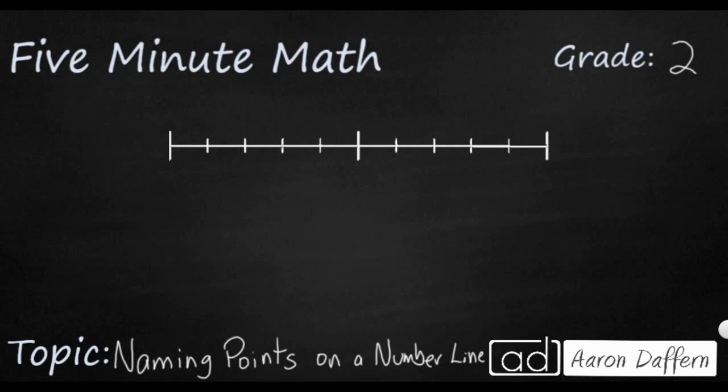So we have a basic number line on the screen and all that's missing are the two boundary numbers. Typically you're going to see something like 340 and then 350.